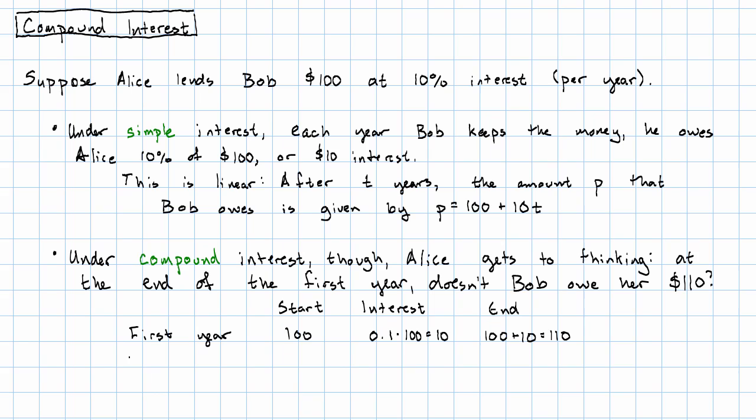So shouldn't that mean that in the second year, at the start of the year, he owes $110? And so the interest is 0.1 times $110. In the second year, he doesn't owe $10 in interest. He owes $11 in interest. And so at the end of the second year, he owes $110 plus $11. At the end of the second year, he owes $121.